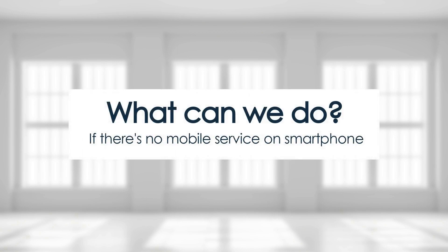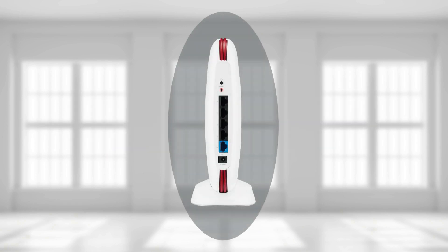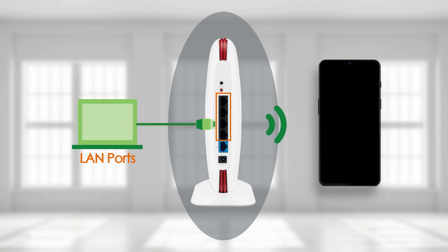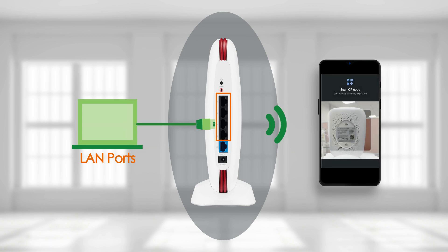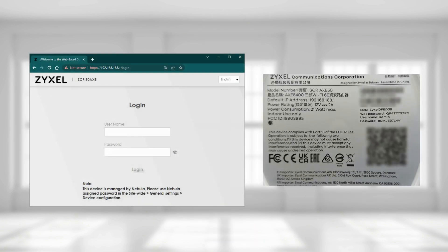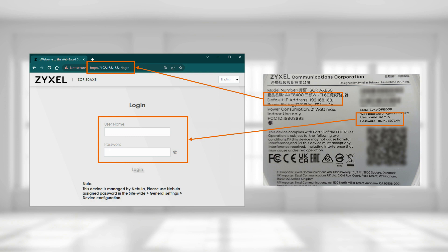But what if you don't have mobile service on your smartphone? If you find yourself in this position, then you'll need to first access the SCR web GUI to update your uplink settings. You can do this by either connecting your computer into one of the SCR's LAN ports or connecting your mobile device to the SCR using its default Wi-Fi. Remember, the QR code on the SCR back sticker works both ways — for mobile app hardware registration and Wi-Fi QR code scanning. Open any internet browser on your computer or mobile device and input the IP address and admin credentials found at the back sticker of your SCR.